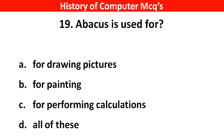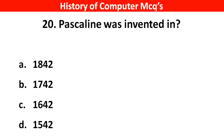Next question. Abacus is used for — Options A: Drawing pictures, B: Painting, C: Performing calculations, D: All of these. Right answer is option C, performing calculations.